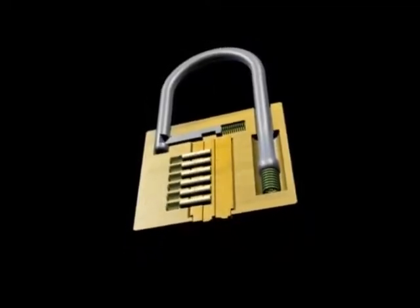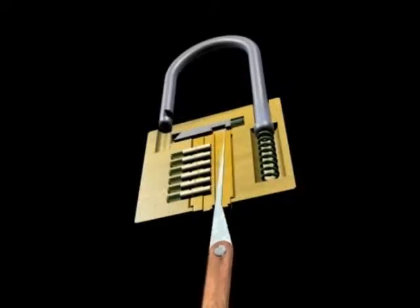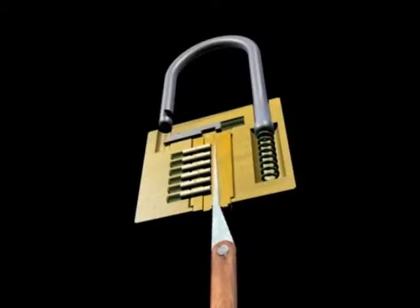The concept is simple: insert your bypass pick all the way into the lock and ignore the pins or wafers completely. Attempt to move the locking bolt manually with your tool. Whatever the lock would have done if unlocked, you should try to do the same thing to the bolt.